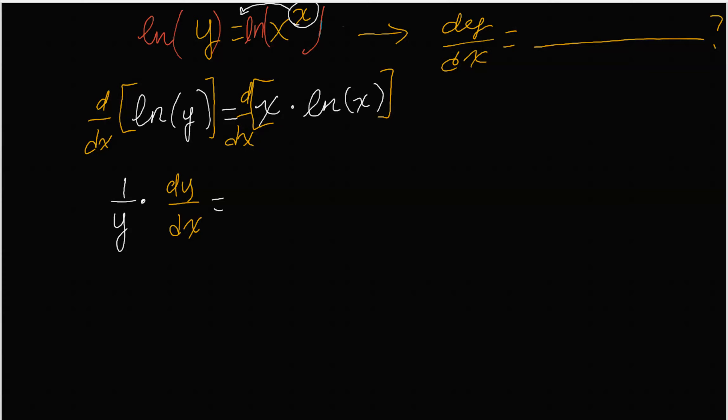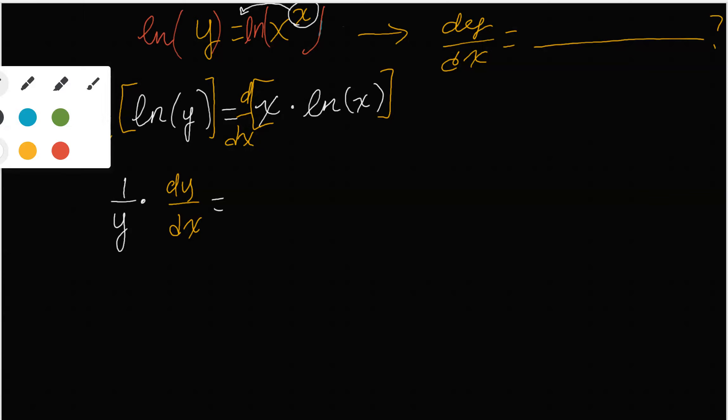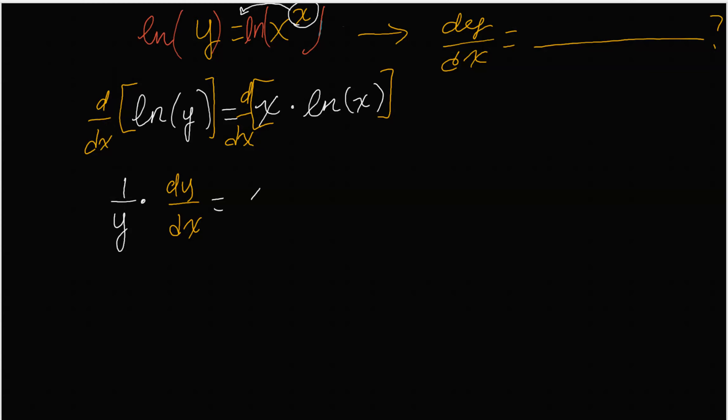On the right-hand side, we are taking the derivative with respect to x. These are x's. Those are the variable that we are taking the derivative with respect to. So that's just normal derivative. And so we don't have to apply implicit differentiation there at that point, right? So product rule apply: the derivative of x, which is 1, multiplied by ln of x, plus the derivative of ln of x, which is 1 over x, multiplied by the first, which is x. x divided by x is 1.